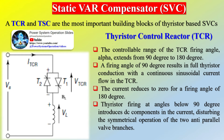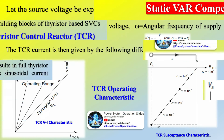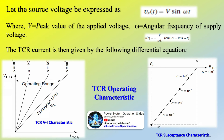Static VAR Compensators (SVC) are shunt-connected static VAR generators and/or absorbers whose outputs are varied to control specific power system quantities. The term 'static' denotes that there are no moving or rotating components. Basic types of SVCs include: thyristor-controlled reactor (TCR), thyristor-switched capacitor (TSC), and saturated reactor. A static VAR system (SVS) is an aggregation of SVCs and mechanically switched capacitors or reactors whose outputs are coordinated. When operating at its capacitive limit, an SVC behaves like a simple capacitor.